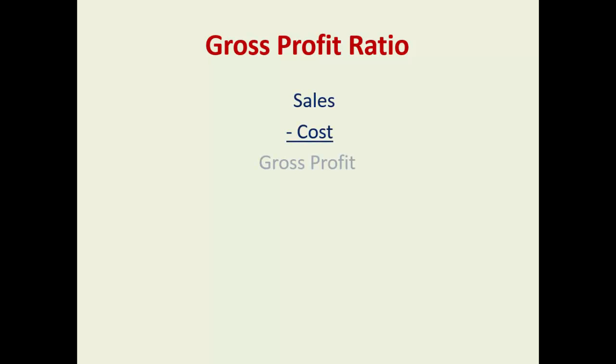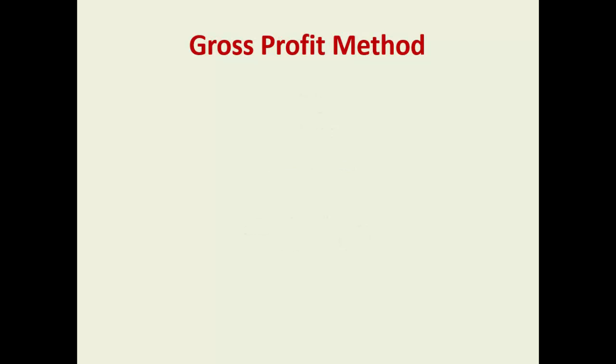So how do I get the ratio? Sales minus cost — that's gross profit. Take the gross profit divided by sales, and there's your percentage.